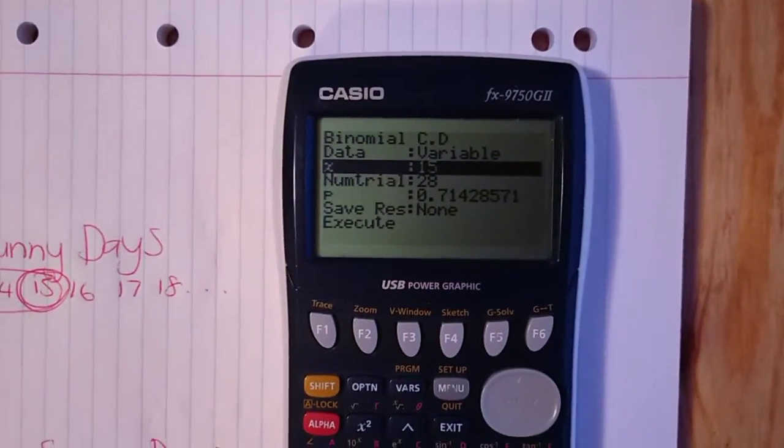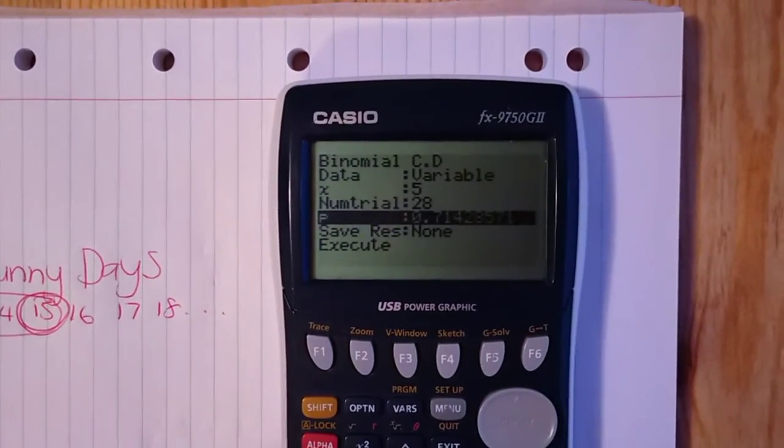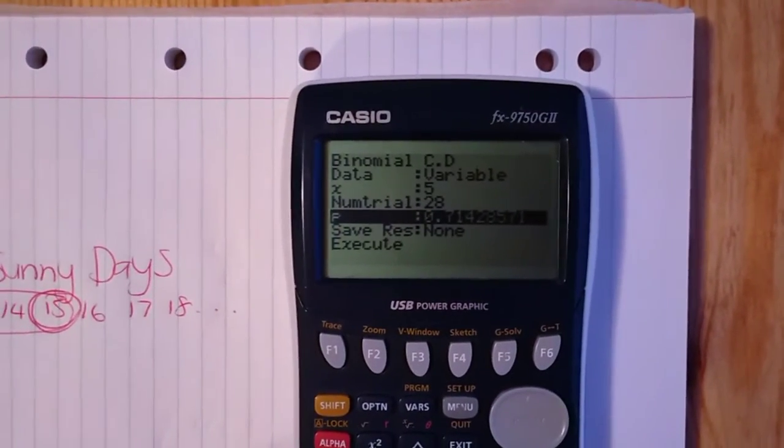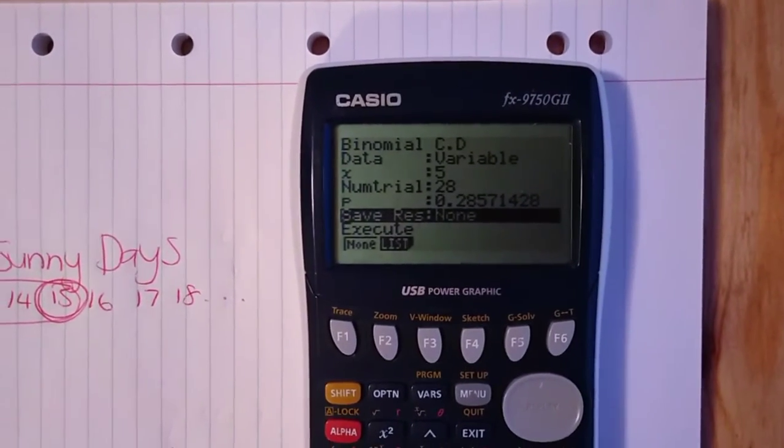So the x is now going to be five. The number of trials, that's still 28. And the probability, we're going to go 8 divided by 28. And we go execute and that changes it to the decimal.